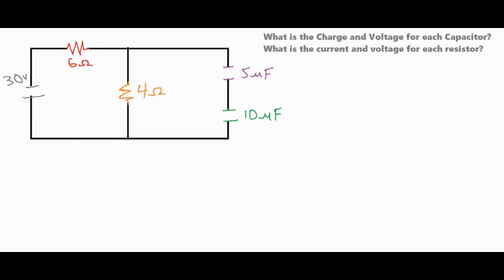Now initially, the current is going to run through both branches, but after an extended period of time, the charge is going to build up on the capacitors over here, and then not allow any current through that branch.